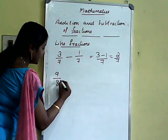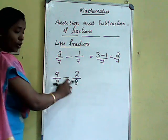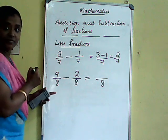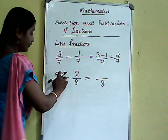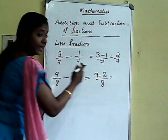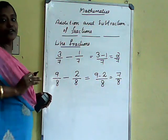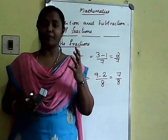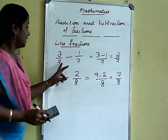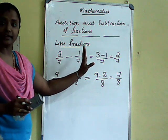Next one: 9 by 8 minus 2 by 8. Here the denominator is same, so the answer's denominator is again the same — put 8. Then we do the operation only in the numerator: 9 minus 2 equals 7 by 8. So for like fractions, we can calculate very simply.